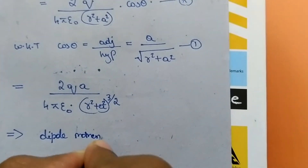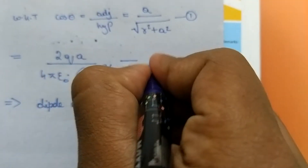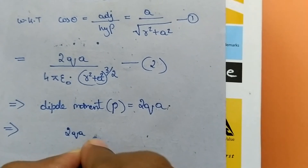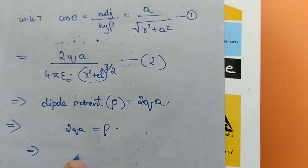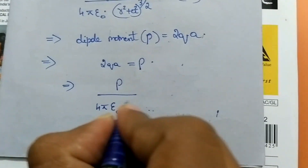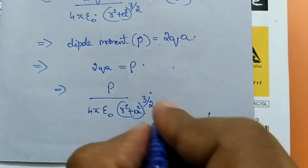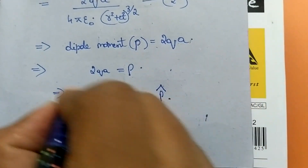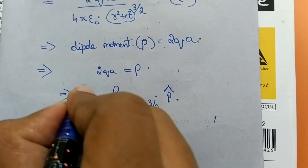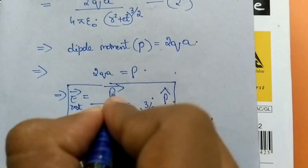The dipole moment p is equal to 2Qa. Substituting this into the equation, 2Qa equals p, so E resultant equals p divided by four pi epsilon naught times (r squared plus a squared) to the power 3 over 2, with direction given by p-cap. This is the expression for the electric field due to a dipole at an equatorial point, where p represents the dipole moment.